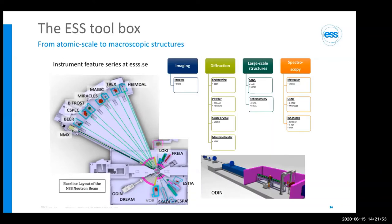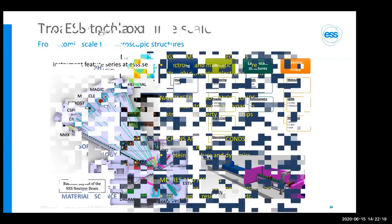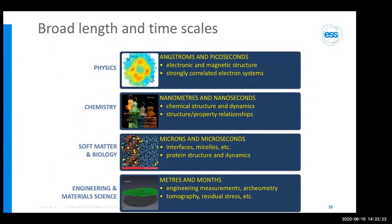To show the scale, a rendering of the imaging instrument ODIN shows a person standing inside, giving a sense of just how large these instruments are compared to X-ray facilities. With this range of instruments, there is a wide range of time and length scales that can be studied with neutron scattering — from physics at the angstrom and gigasecond scale down to engineering and materials science.